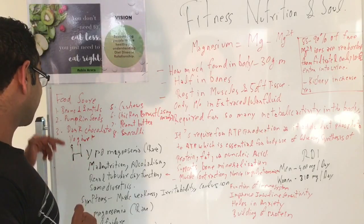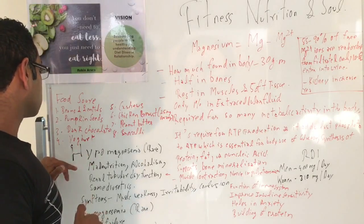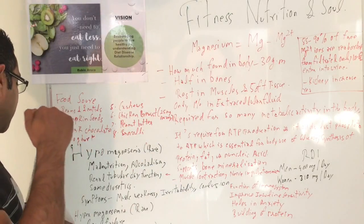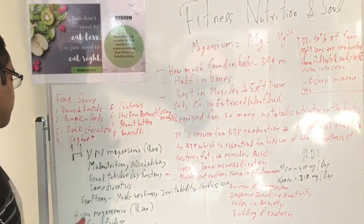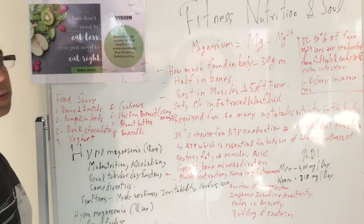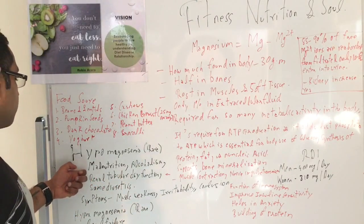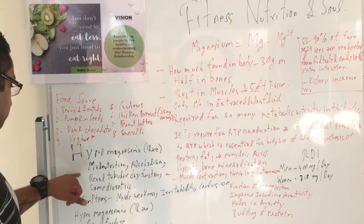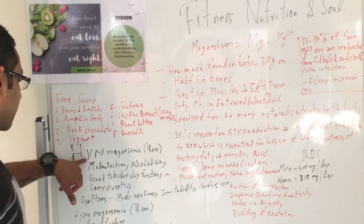Now we're going to talk about hypomagnesemia and hypermagnesemia. Hypo is when the magnesium level is below the recommended level in the blood or in the body, and hyper is when it's too much in the body. Both things happen very rarely though. Hypo happens due to malnutrition, alcoholism, or renal tubular dysfunction.